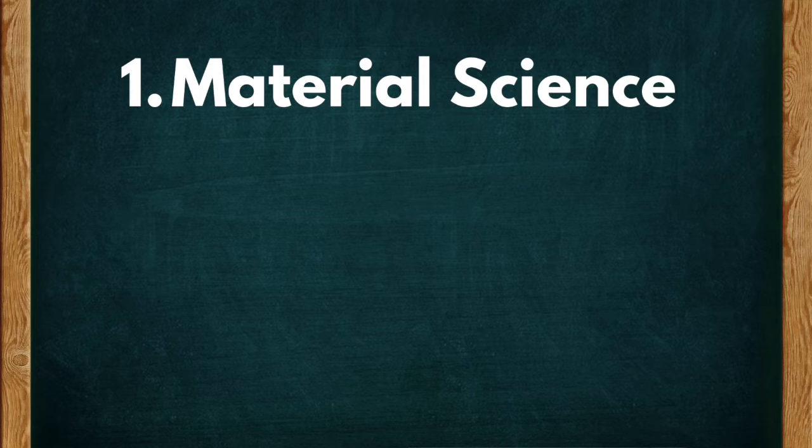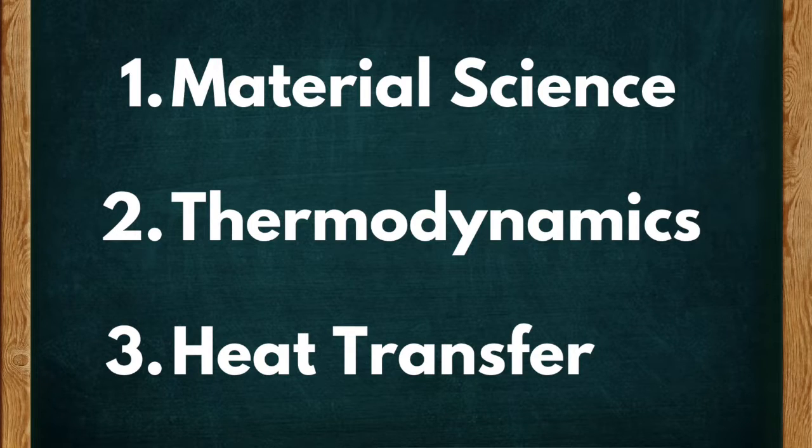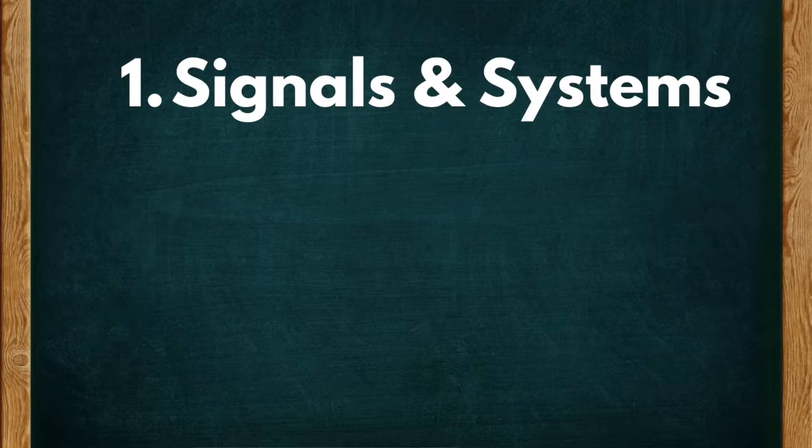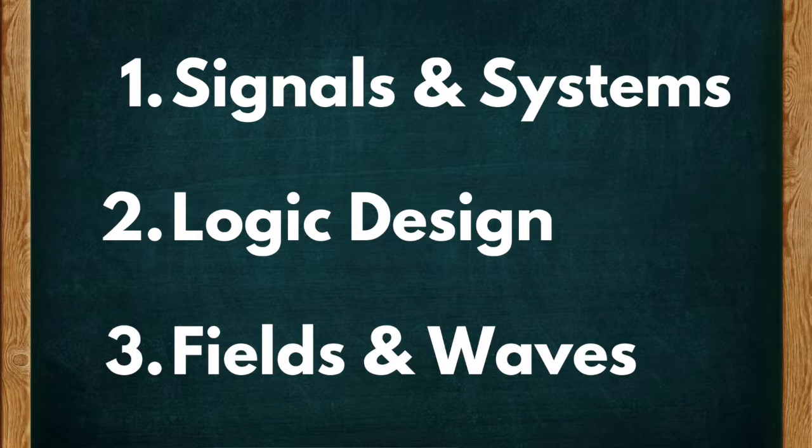Now when you're done taking the core classes, you'll start taking classes that are specific to your career. For mechanical engineers, this can mean taking classes like material science, thermodynamics, and heat transfer. And for electrical engineers, this means taking classes like signals and systems, logic design, and fields and waves.